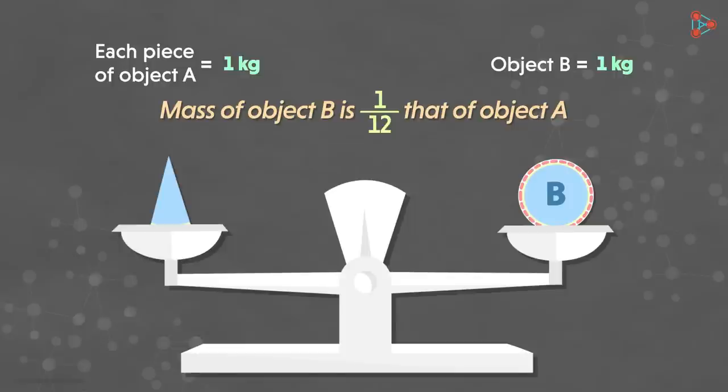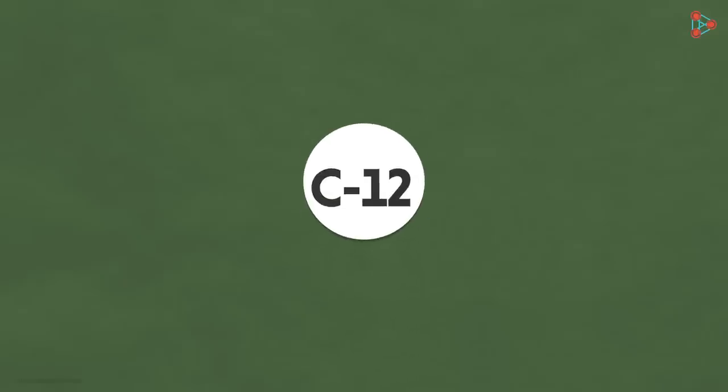Since we cannot directly calculate the mass of an atom, we usually calculate it with respect to the mass of a carbon atom. We take carbon 12 as our standard. Wait! What is carbon 12? What does it mean?